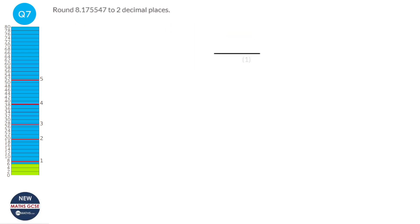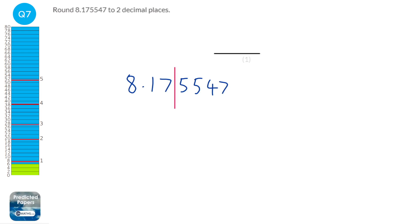We're going to round to 2 decimal places. We draw a line after the second decimal place — all the numbers to the right are going to disappear. But we have to look at the next number first. If that number is less than 5, we keep the digit to the left, so 8.17. But if it's 5 or more, then this 7 goes up to an 8, so this will be 8.18.